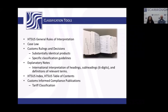These are some general classification tools that we as brokers go to regularly and encourage importers to look at as well. There are all kinds of resources: cross rulings, case law, the general rules of interpretation, explanatory notes, the HTSUS index, and customs informed compliance publications. We've also got some links at the end of this presentation. There are really all kinds of tools out there that we can use.